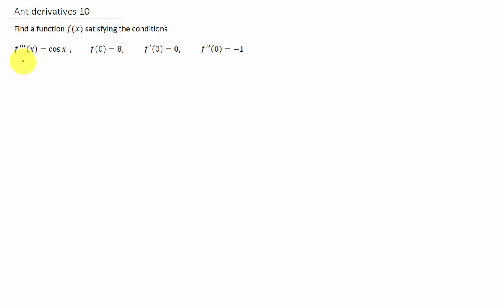So this is a pretty fun problem. We're given that a function's third derivative is cosine of x, and then we're given a bunch of initial conditions here. There's one condition on f, one on f prime, and one on f double prime.